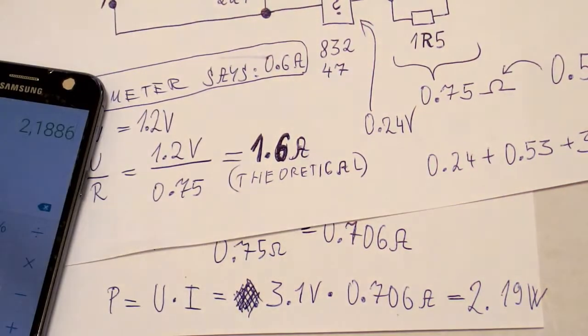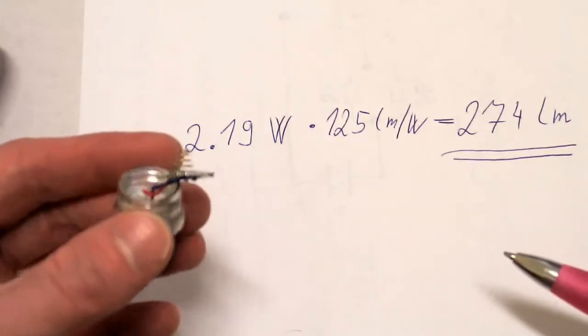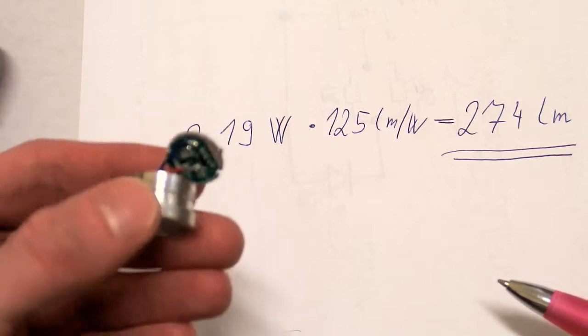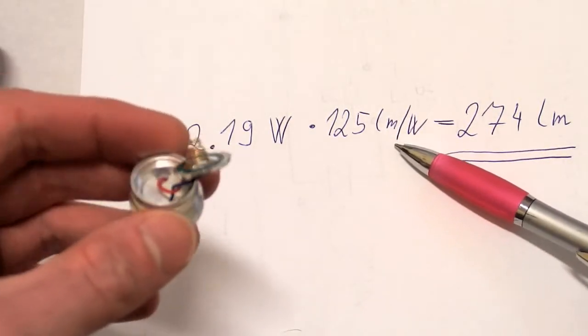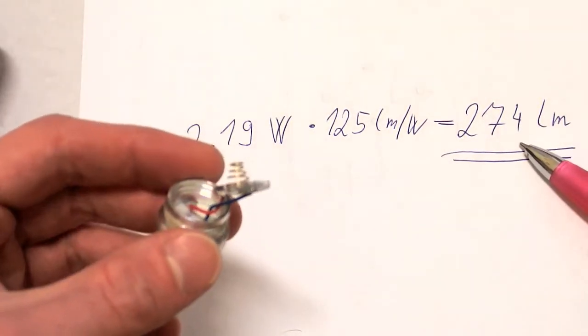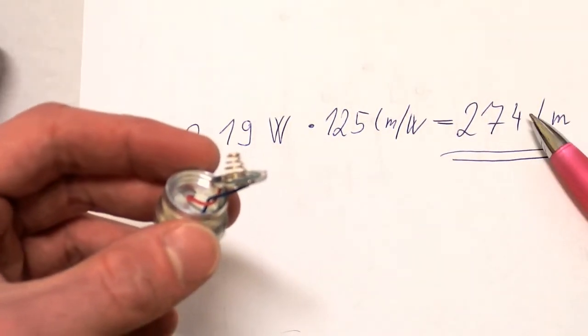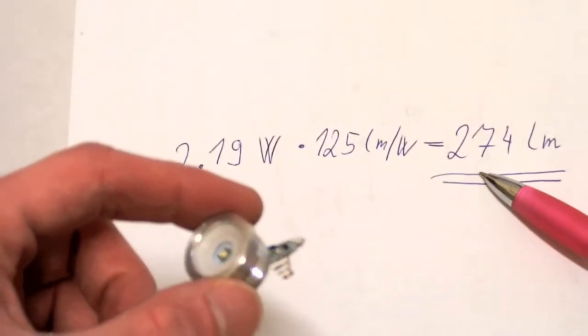So the power of the LED is actually about 2.2 watts. So we know the power, and if this was the best commercially available LED, which has about 125 lumens per watt at full power, the real light output should be about 274 lumens. I don't have any device to measure the actual light output, but I think this is close to reality.